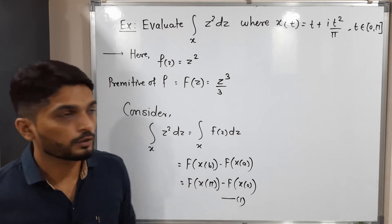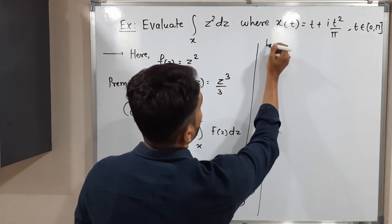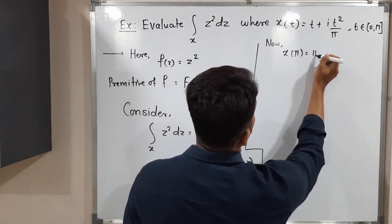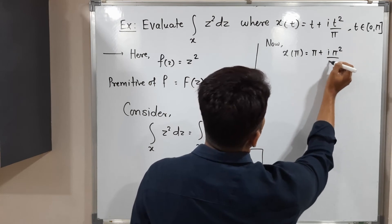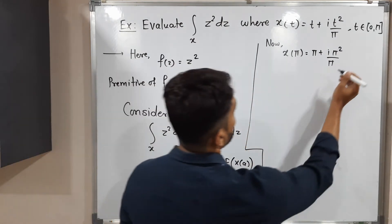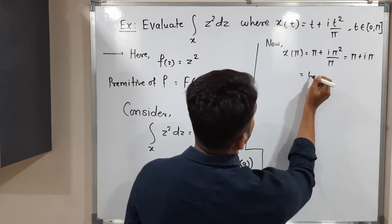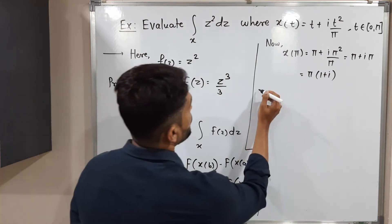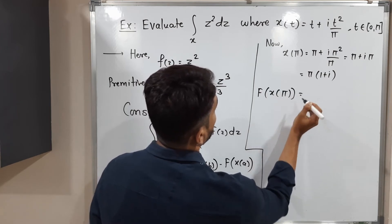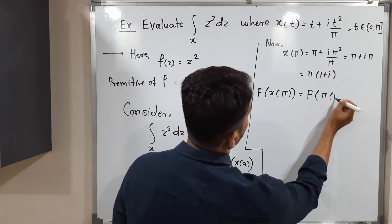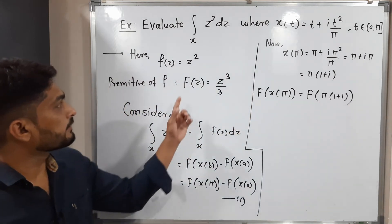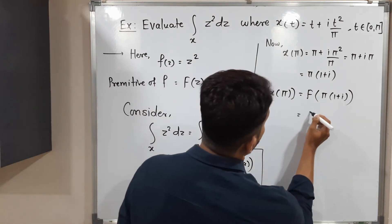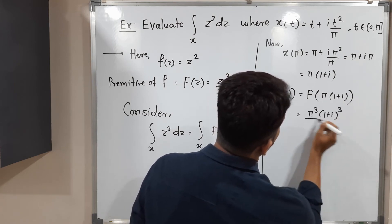Let us work on F of X of pi. First, I will find X of pi — at the place of t we put pi. We get pi plus i times pi squared over pi, so one pi cancels, giving us pi plus i times pi, which we can write as pi times (1 + i). So X of pi equals pi(1 + i). Now capital F of X of pi means we take the cube of pi(1 + i) and divide by 3, giving pi cubed times (1 + i) cubed divided by 3.